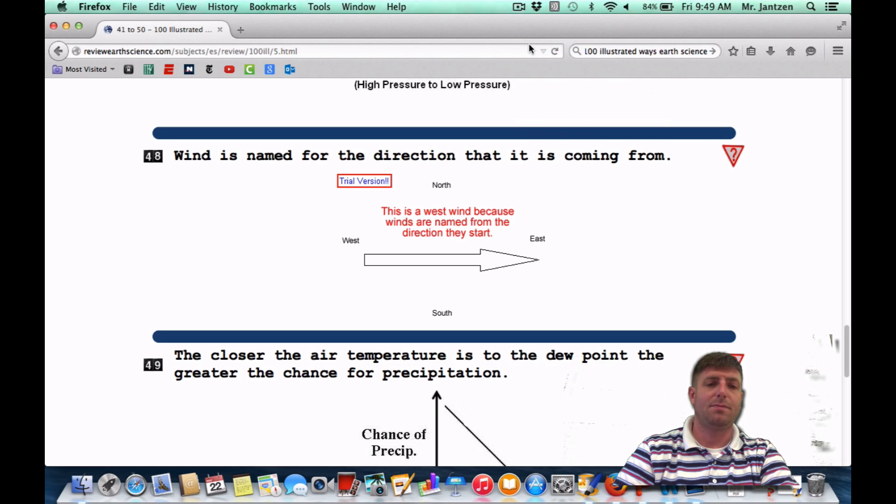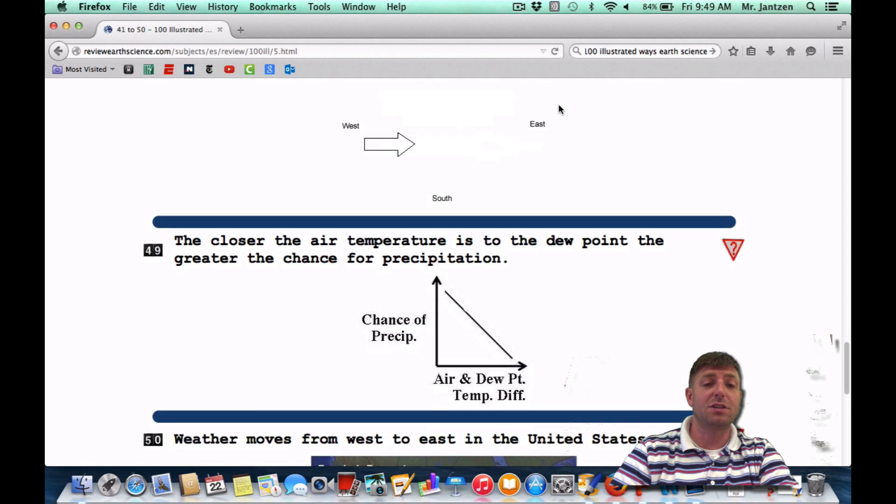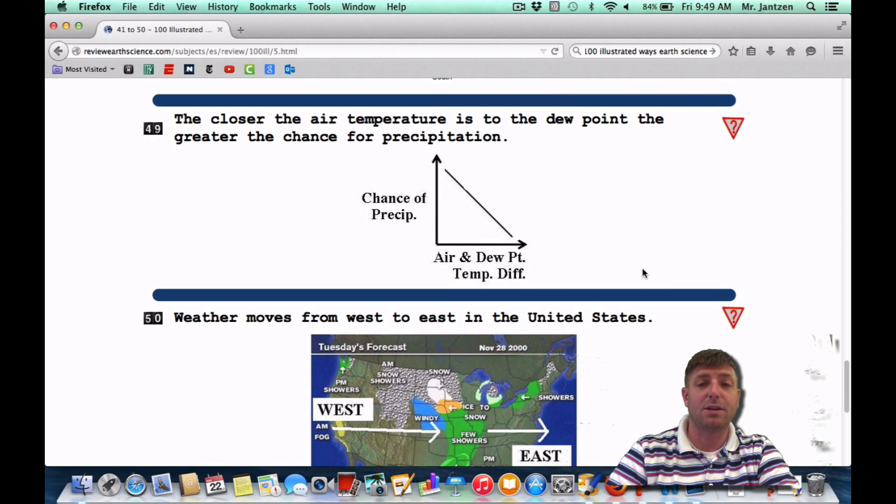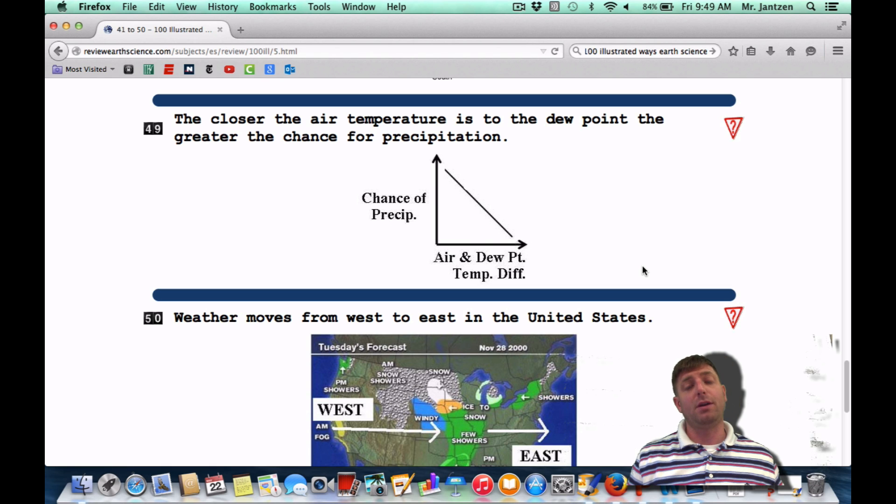Number 49. The closer the air temperature is to the dew point, the greater the chance of precipitation. The dew point is the point at which dew occurs. That's the point at which condensation is occurring. So the closer the temperature is to that, the more likely you're going to have precipitation. This interesting graph shows the air temperature and dew point difference. As that increases, your chance of precipitation is going to decrease. This is showing an inverse relationship.